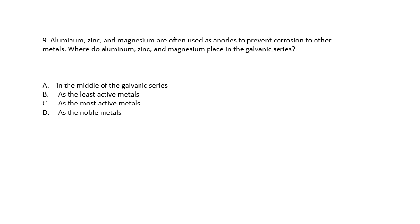Question 9. Aluminum, zinc, and magnesium are often used as anodes to prevent corrosion to other metals. Where do aluminum, zinc, and magnesium place in the galvanic series? In the middle of the galvanic series, as the least active metals, as the most active metals, or as noble metals. They are the most active. That's why they're used as anodes.